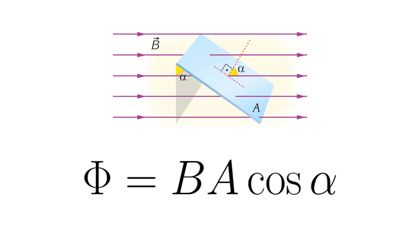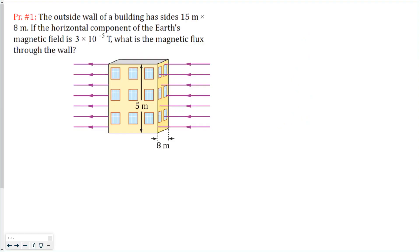We know that if magnetic field lines are passing through a particular surface which has area A, the flux through this surface can be found by multiplying magnetic field strength by the area and by the cosine of the angle between the normal of the plane and the magnetic field lines.